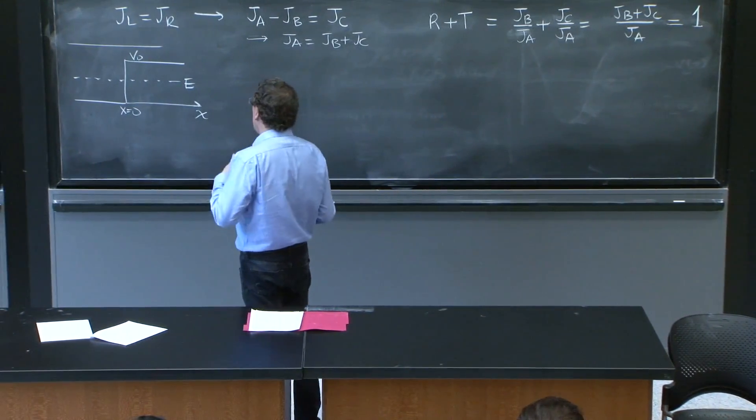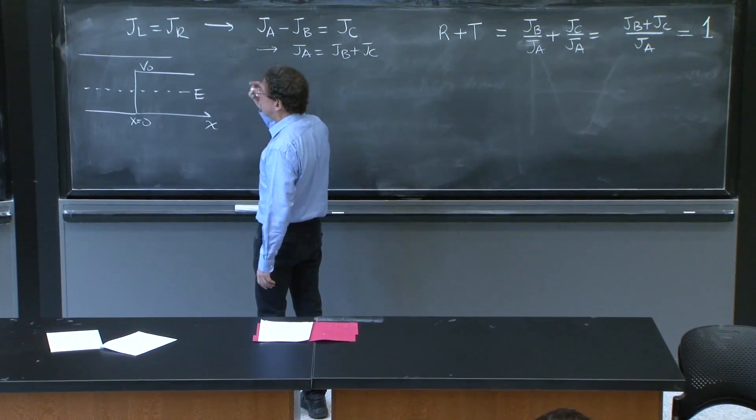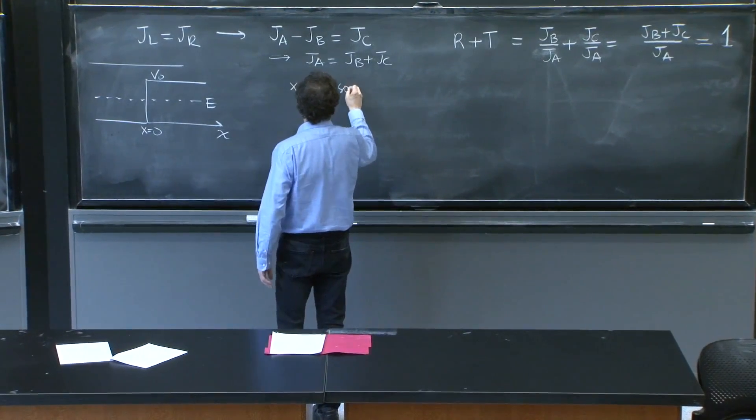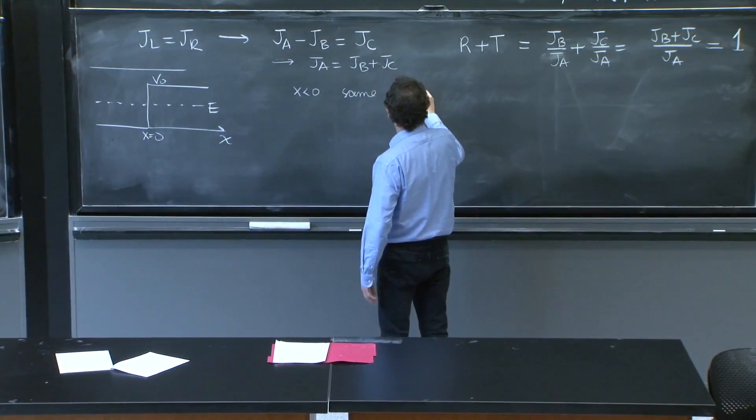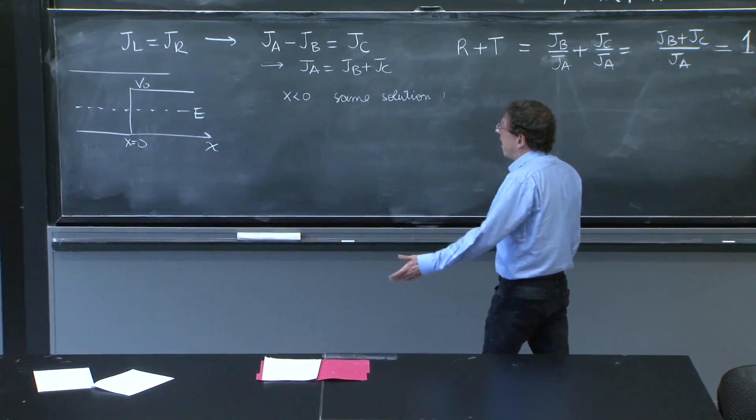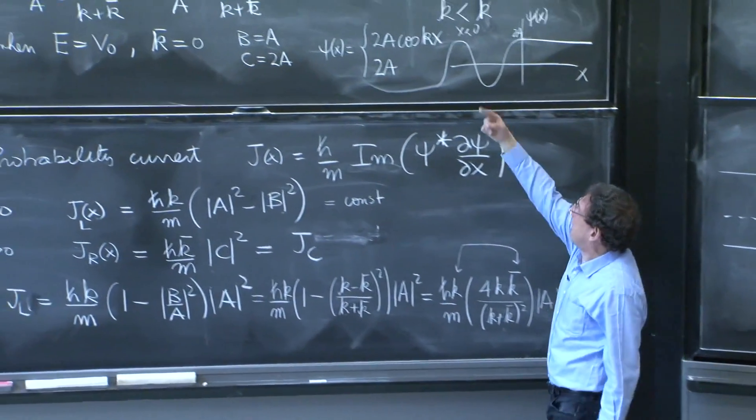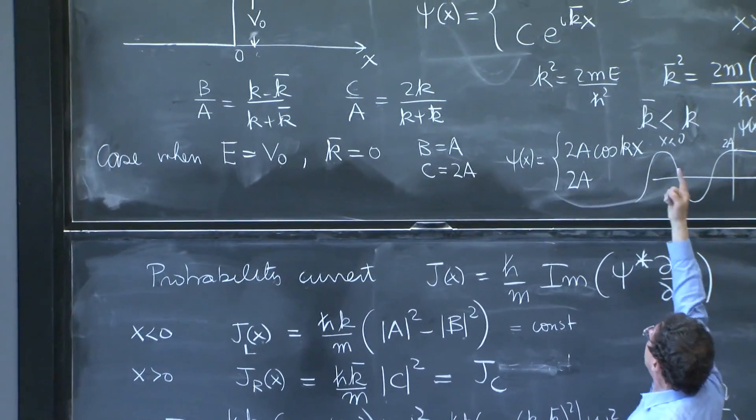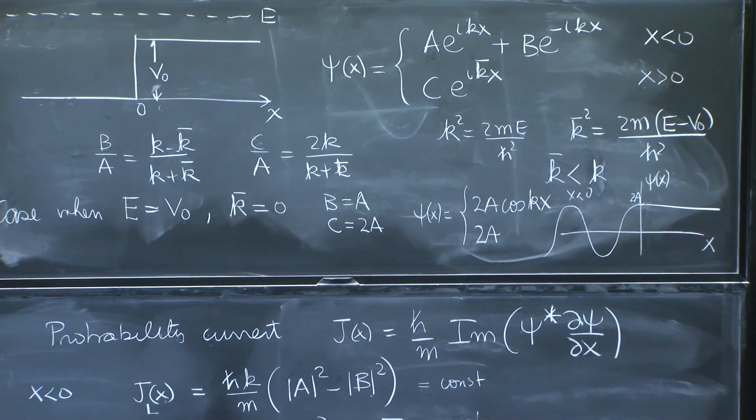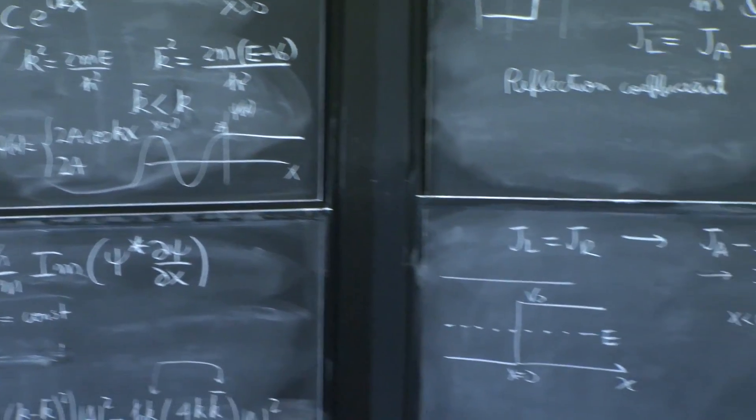But it's a nice, simple thing. We first say that the solution is the same for x less than 0. So for x less than 0, we write the same solution. Because the energy is greater than 0, and all what we said here, the value of k squared, A e^(ikx), B e^(-ikx), it's all good. And k squared is still 2mE over h-bar squared.